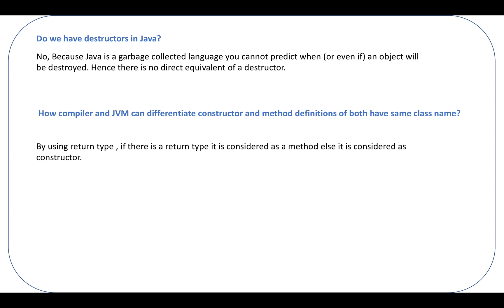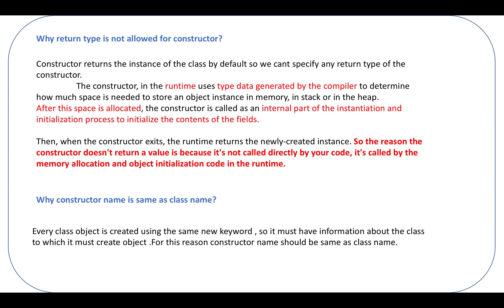How can the compiler and JVM differentiate a constructor and method definition when both have the same class name? By using the return type. If we see that a method doesn't have a return type but has the same class name, that means it's a constructor. If it has some return type, it will not be a constructor — it will be a plain normal method.